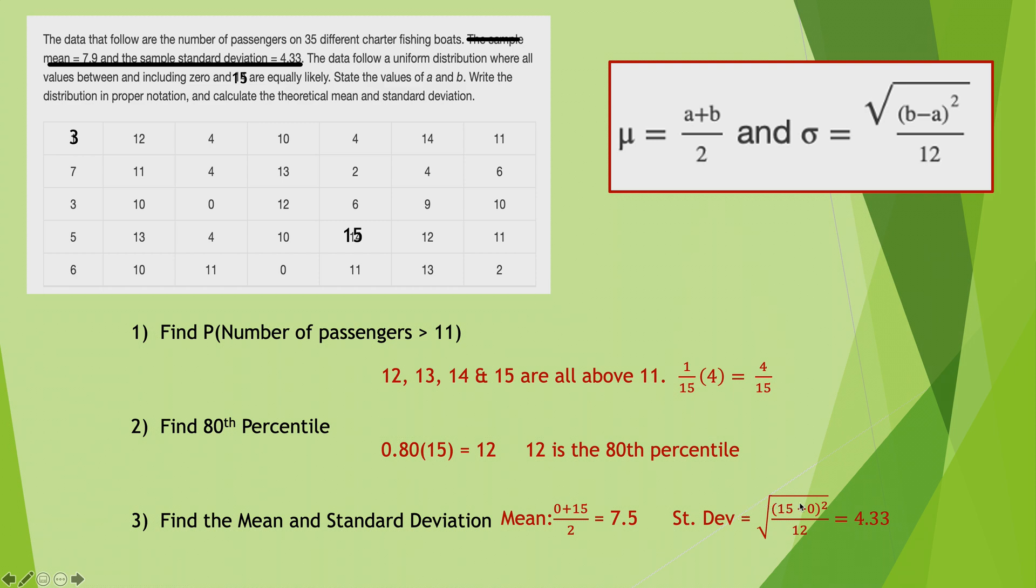And the standard deviation is just B minus A, 15 minus 0, squared, divided by 12, always divided by 12. And then I got to square root that, which gives me 4.33.